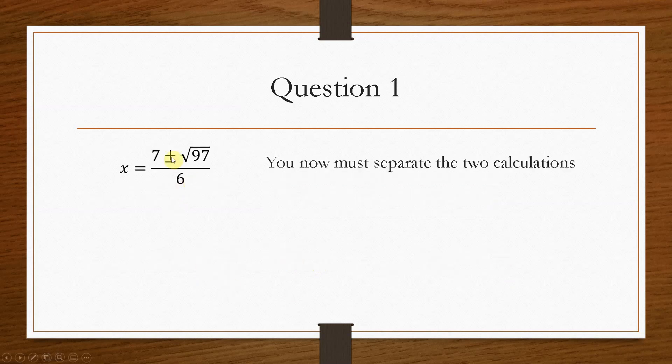So then because of this plus or minus, what we are saying is there are two separate calculations. So we need to split these apart. And the way that we do that is one of the equations will have a plus and the other one will contain the minus.